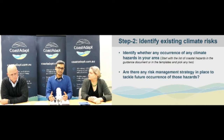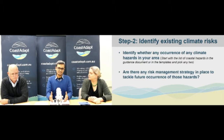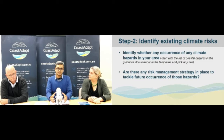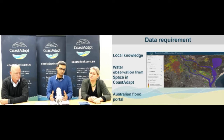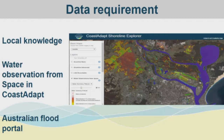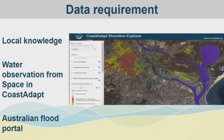Step two is essentially working with local knowledge — people who have local knowledge and expertise — to find out what sort of previous hazards have happened in your area in the past. You might find that there are certain areas in your council that are already erosion prone, or you might have some areas that are already getting inundated during high tides. If you don't have any risk management strategy for tackling those existing erosion or inundation related issues, that means there is existing residual risk in your system regardless of climate change. The most important data you can use in this step is local knowledge and talking to local experts. Another data product from Coast ADAPT — water observation from space — can also be used, which can help you to identify areas that have been flooded in the past.